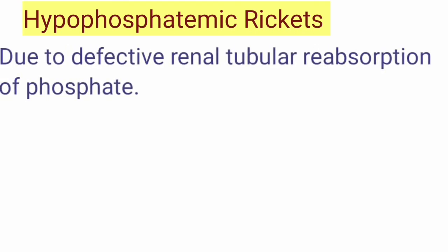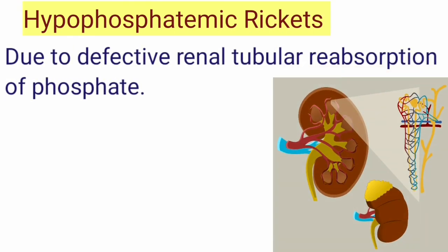Hypophosphatemic rickets mainly results from defective tubular reabsorption of phosphate.